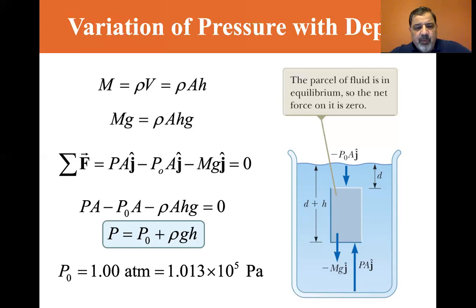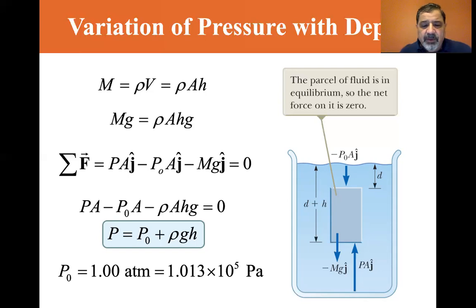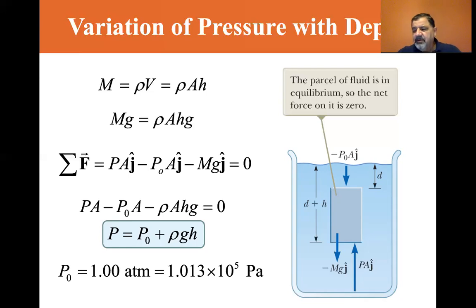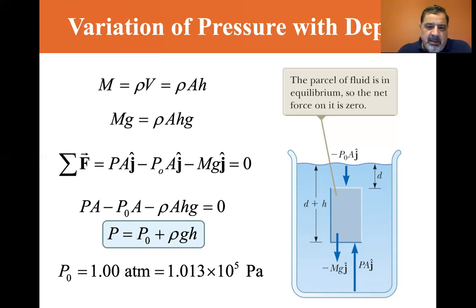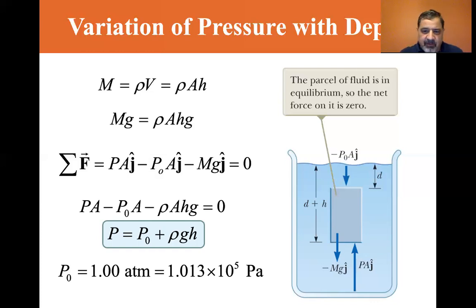Atmospheric pressure P₀ equals 1.013×10⁵ pascals, or more precisely 101,325 pascals — just over 100,000 pascals.